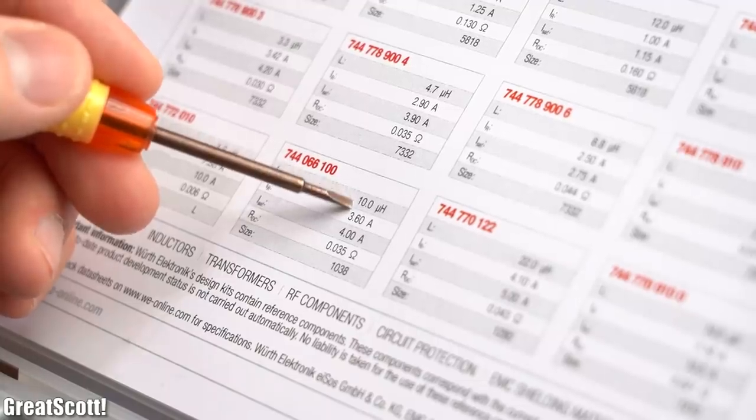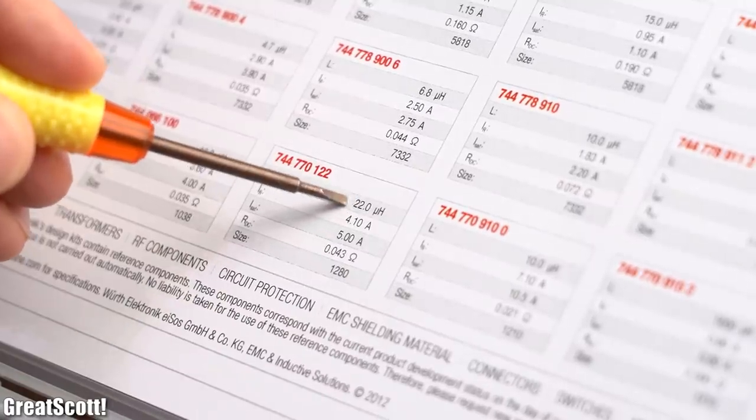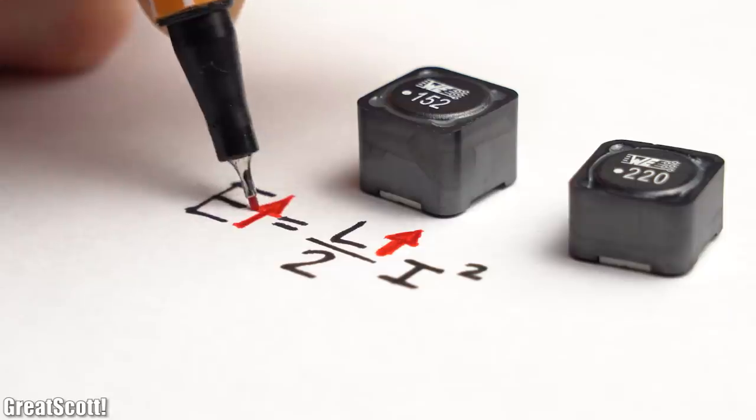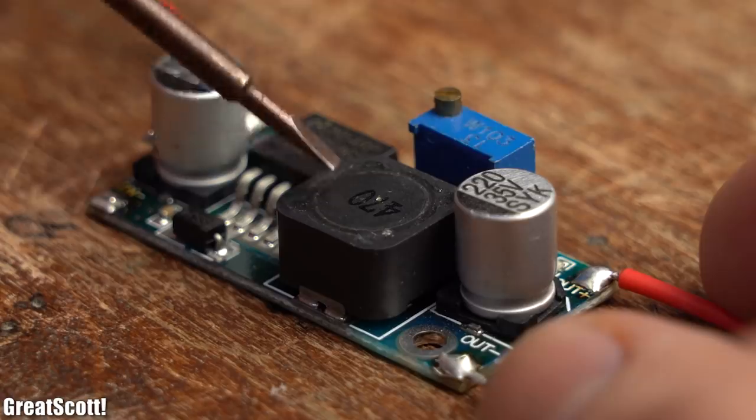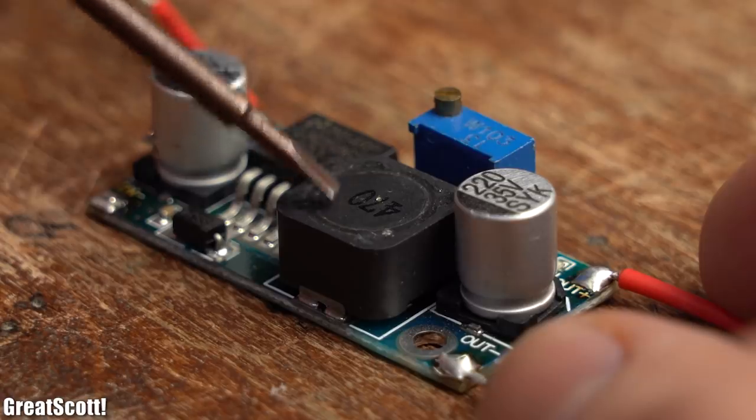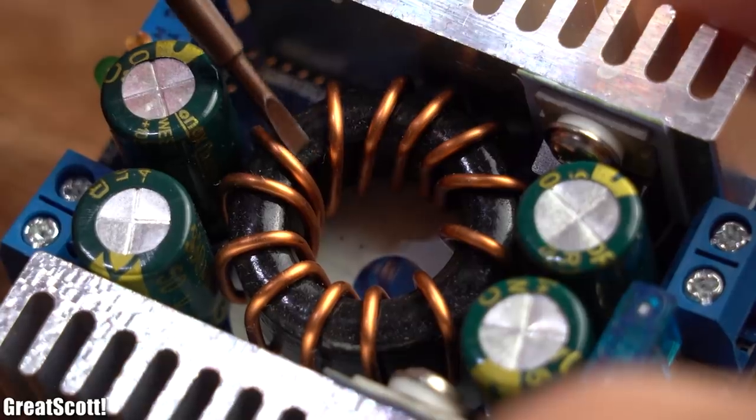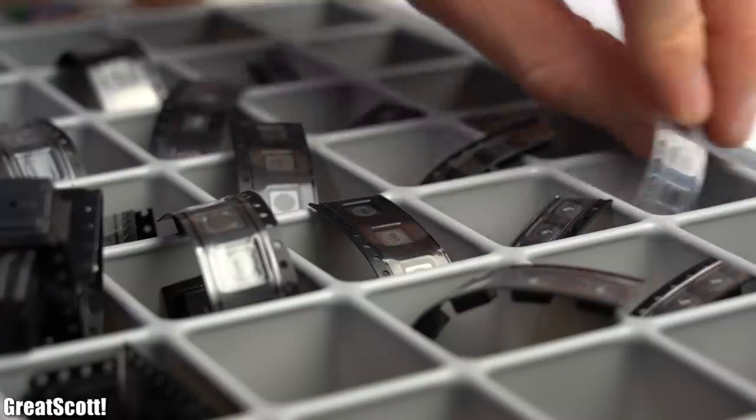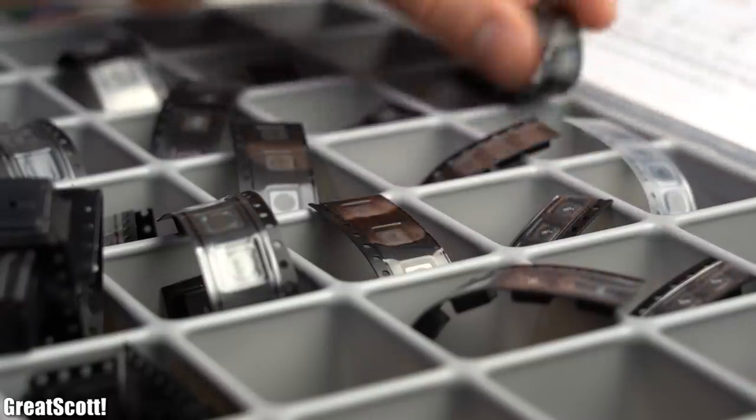At this point some of you might think, well I will just use a big inductance because it can store more energy and thus the converter should be able to output more power. And when we have a look at different commercial buck converters, then it seems like this theory is somehow correct.